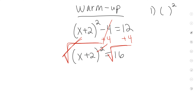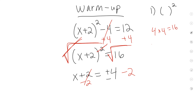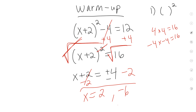So what is the square root of 16? It's 4 and negative 4. Because 4 times 4 is 16 and negative 4 times negative 4 is also 16 — that's why there are two answers. Now what do I do to both sides? Subtract 2. So my answer is 4 minus 2 is 2, and negative 4 minus 2 is negative 6. These are my two answers.